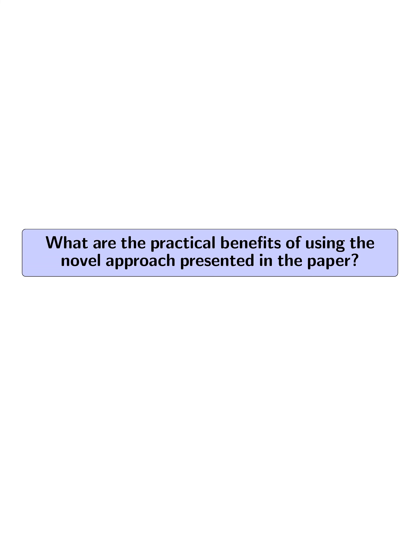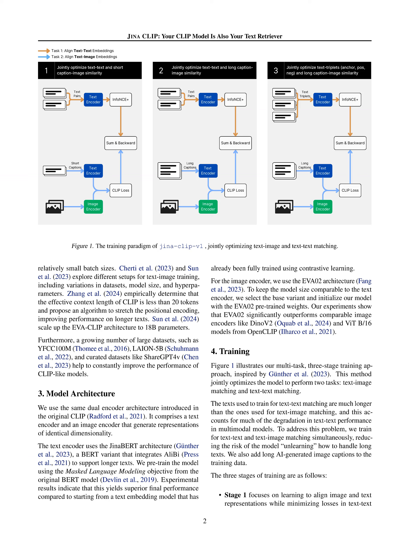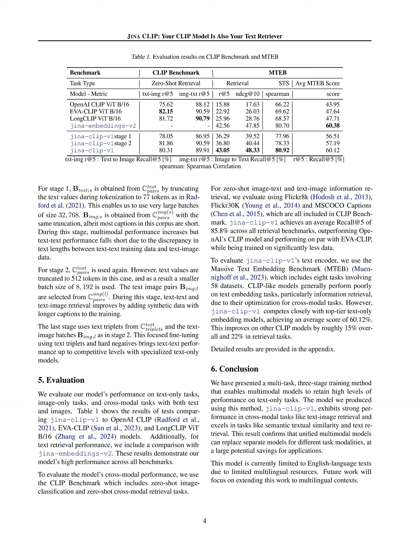What are the practical benefits of using this approach? The practical benefits include improved performance in text retrieval tasks, text-image retrieval, multimodal retrieval augmented generation, and image generation. The model addresses the limitations of CLIP-style models in capturing richer information in longer texts by jointly optimizing for representation alignment of both text-image and text-text pairs, enabling strong performance in tasks involving both short and long text contexts. It achieves competitive performance on cross-modal benchmarks like the CLIP benchmark.